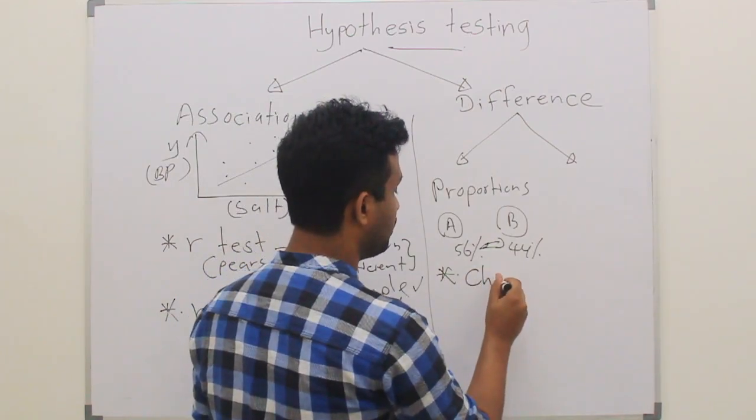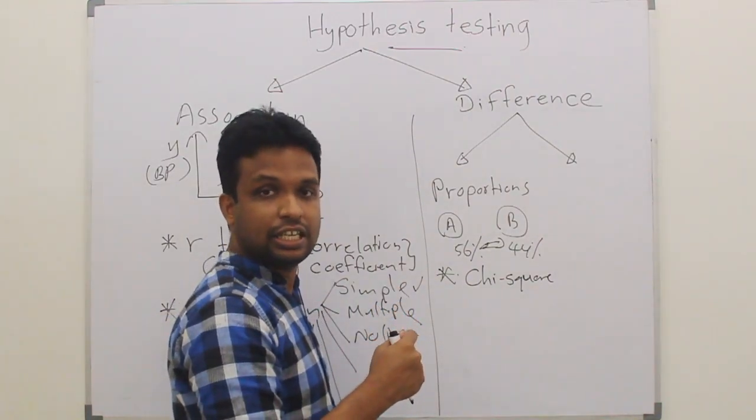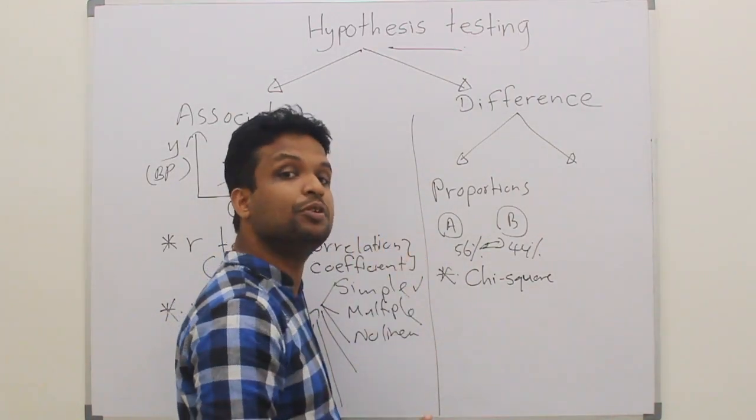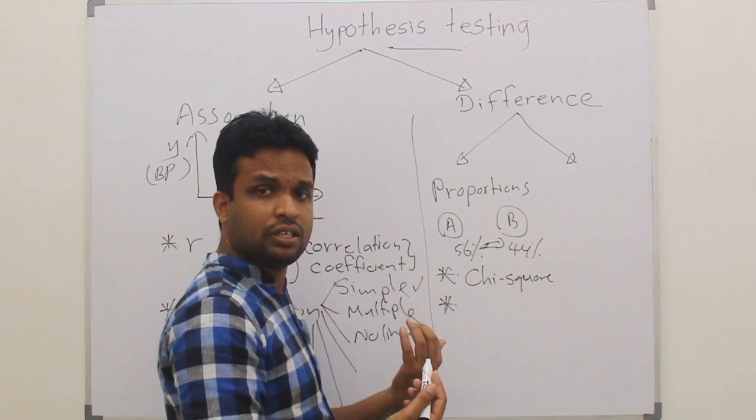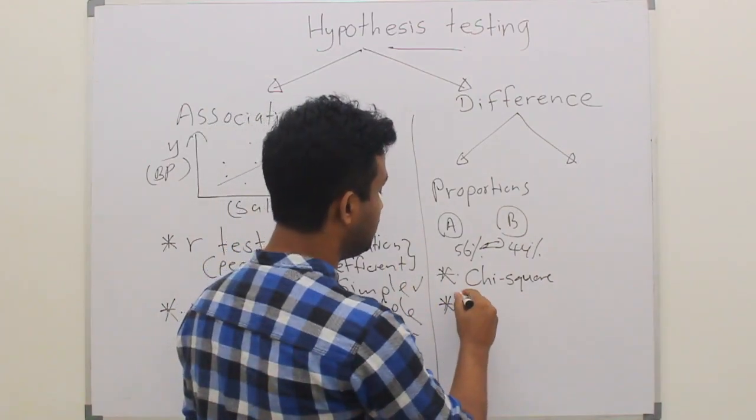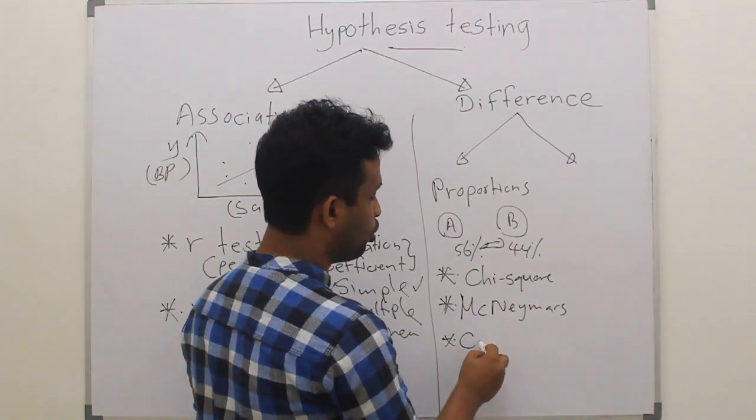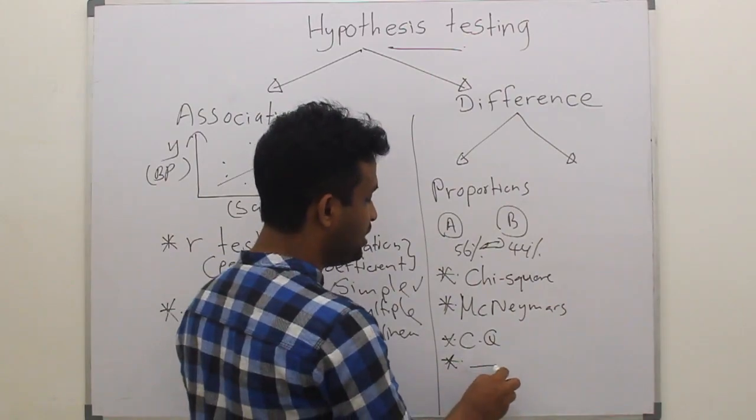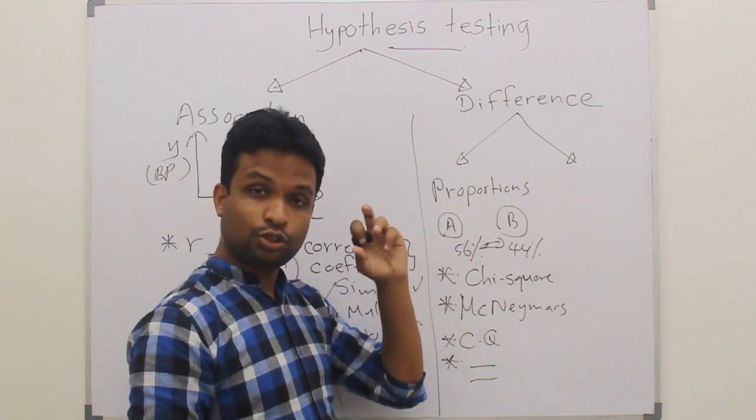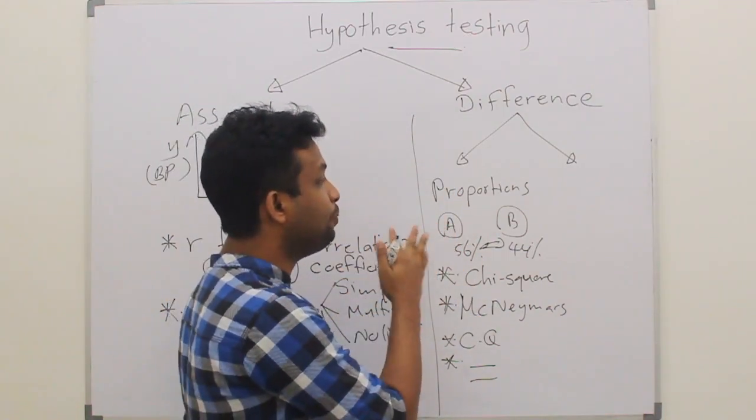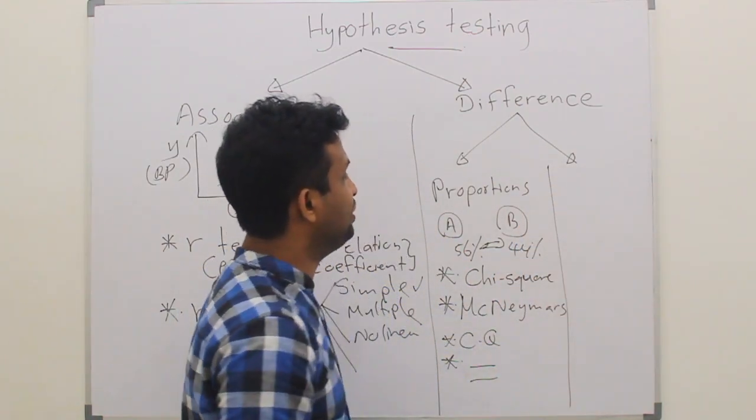One is chi-square test. This is one of the most common statistical tests that we are using to test the difference between proportions. Also, we have some other tests based on the different methods that we are testing, like McNemar's test, Cochran Q test and many other tests that we can list. These are available tests to test the hypothesis in relation to difference of proportions.